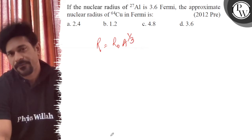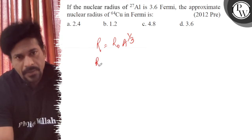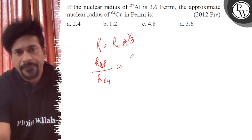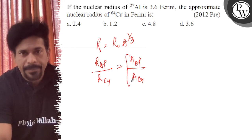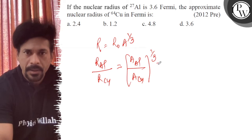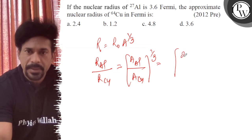So R of aluminum divided by R of copper is equal to A of aluminum upon A of copper, and that power of 1/3. So we can say it is 27 divided by 64, they are mass numbers, power 1/3.